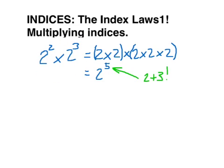Multiply indices with the same base. For example, 2 squared times 2 cubed equals 2 times 2 times 2 times 2 times 2, which is 2 to the power of 5. So here we added the powers.